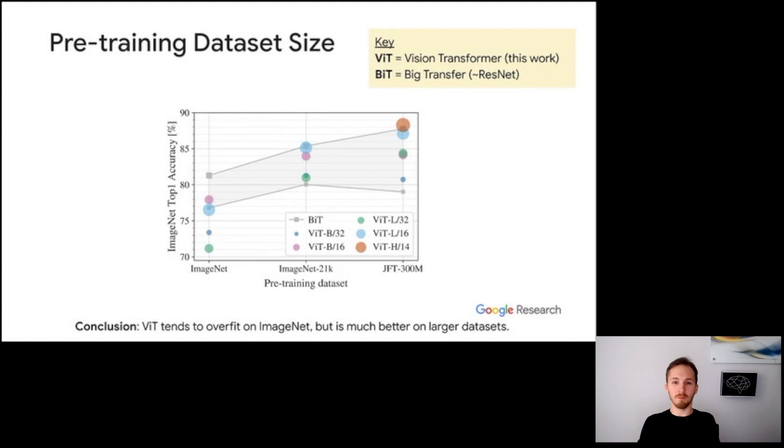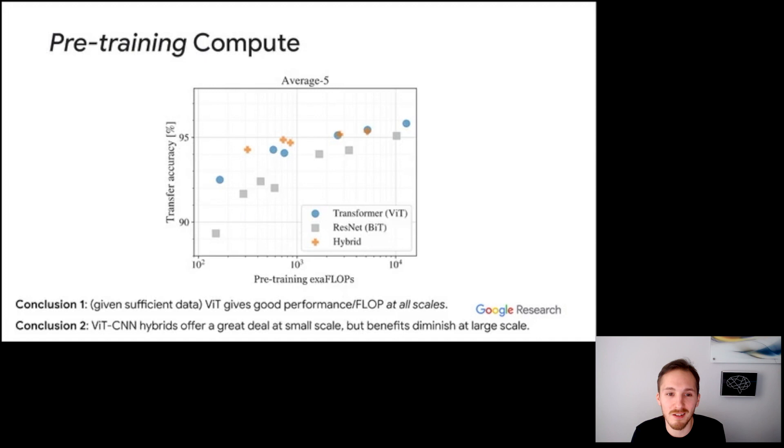Thanks, Neil. So now let's talk about the experiments. The first one is about the pre-training dataset size. On the x-axis are the increasingly large pre-training datasets, ImageNet, ImageNet-21K, and JFT. And on the y-axis is the transfer top-1 accuracy on ImageNet. Colorful circles are vision transformers of different sizes, and the shaded area corresponds to ResNets of different sizes from the big transfer work. The main conclusion here is that vision transformers tend to overfit on smaller datasets like ImageNet and thus perform slightly worse than ResNets. But on larger datasets, transformers shine and there they match or outperform ResNets.